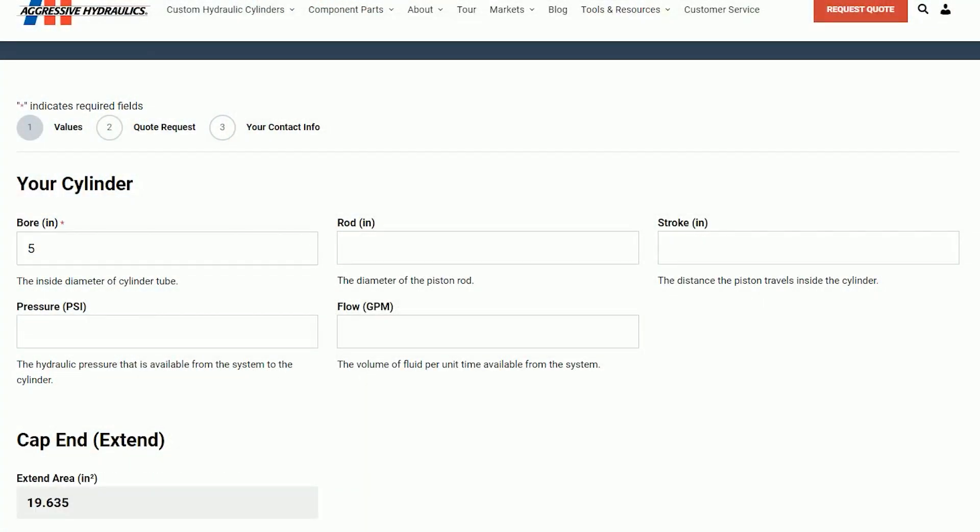Step 1: Enter the cylinder bore, rod, and stroke values in inches. Step 2: Specify the system pressure in pounds per square inch. Typical operating pressures are 2,000 to 3,000 PSI.